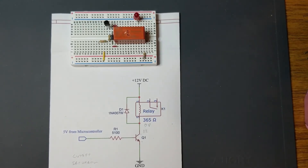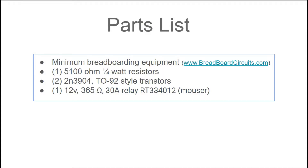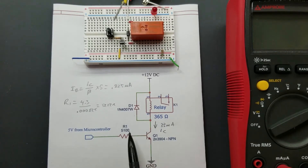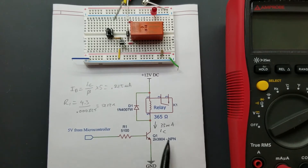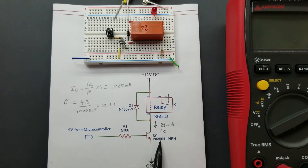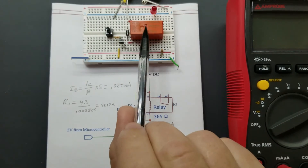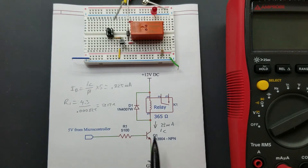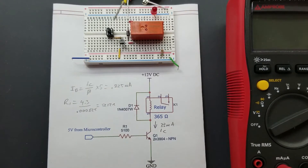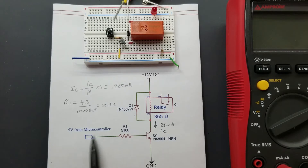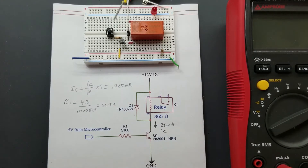To calculate component values, first select a transistor. The 2N3904 is a very good general-purpose transistor for driving relays of 100 milliamps or less. Its breakdown voltage is around 60 volts, making it well-suited for this configuration. This is a single-stage relay driver circuit where the microcontroller, which can only output 5 volts and cannot drive the relay on its own, relies on this transistor to translate that into 12 volts for the relay.